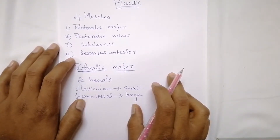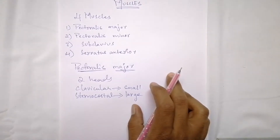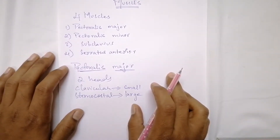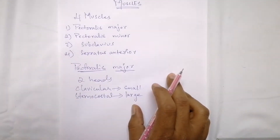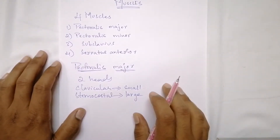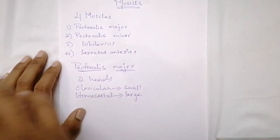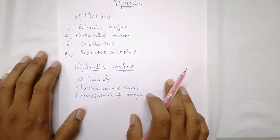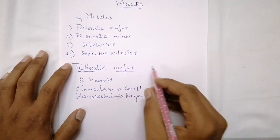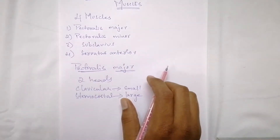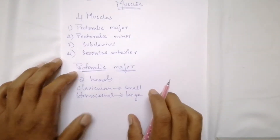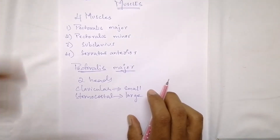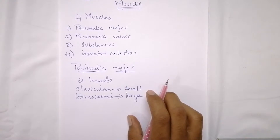To test the clavicular head of pectoralis major, the arm is abducted to 90 degrees with respect to the thorax and moved forward against resistance — you can then observe the clavicular head. To test the sternocostal head, the arm is abducted 60 degrees and then adducted against resistance for identification of the sternocostal head.